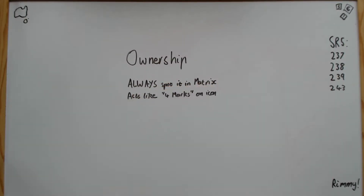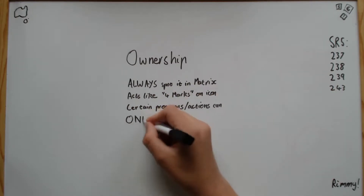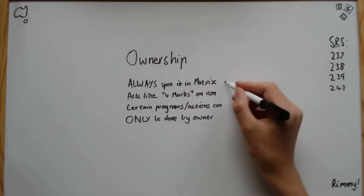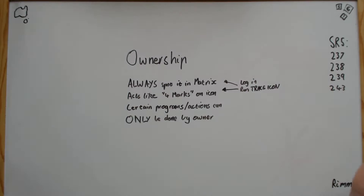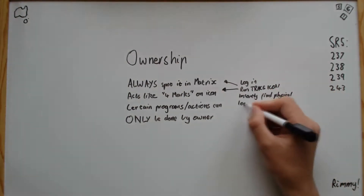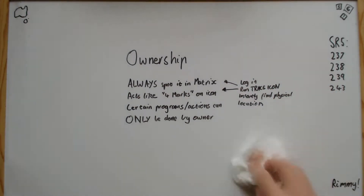This means that if you steal someone's smart gun, they can log on to the matrix, instantly see the gun, and then run a trace icon to find your physical location. Other actions, such as change icon and invite marks, can only be done by the owner.